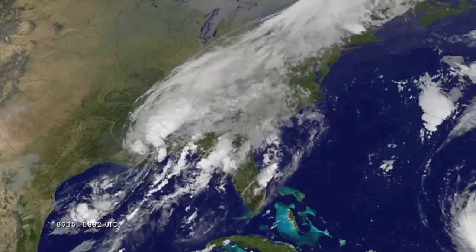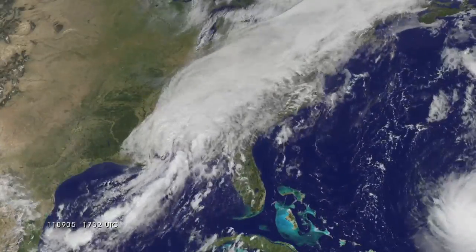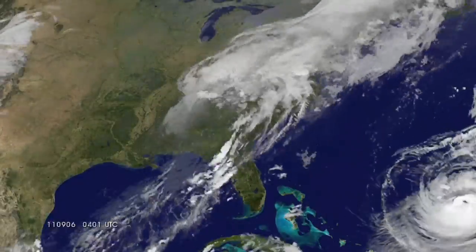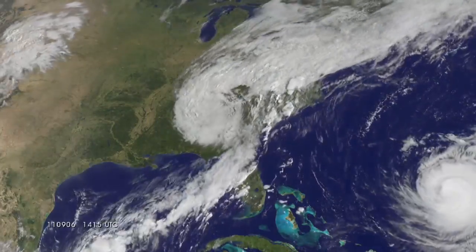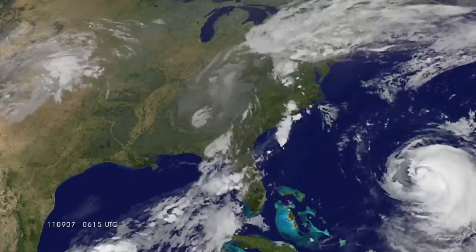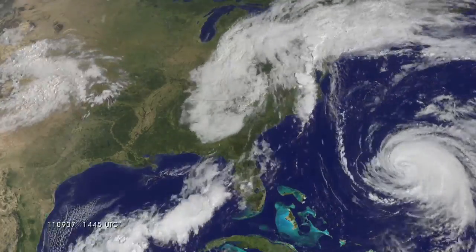The atmosphere is a fluid that has, at each altitude above each point of the Earth's surface, a speed, a density, a pressure, a temperature, and so on. All of this data varies over time.